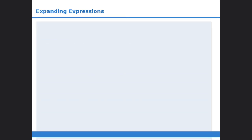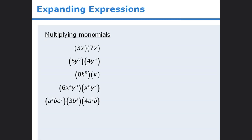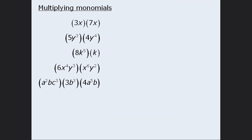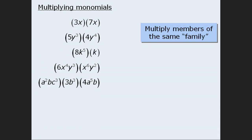In this lesson we will learn how to multiply expressions. We will begin by multiplying a monomial by a monomial. When multiplying monomials the rule is to multiply members of the same family. So we will multiply constants by other constants, x's by x's, y's by y's, and so on.